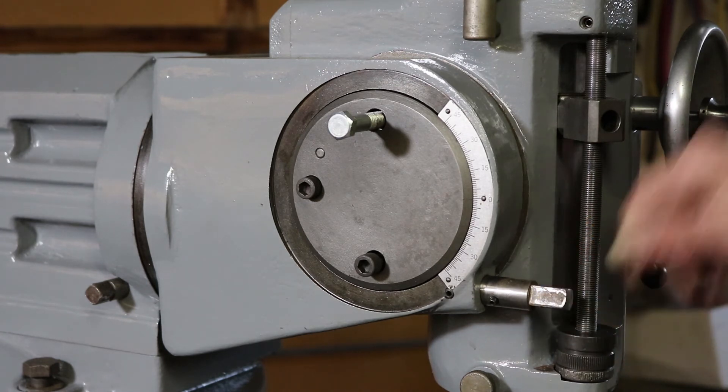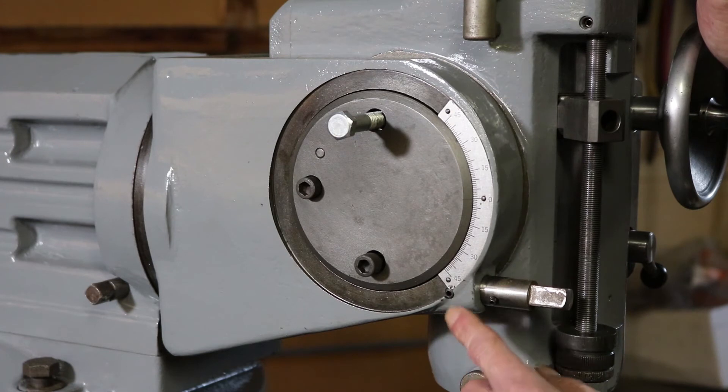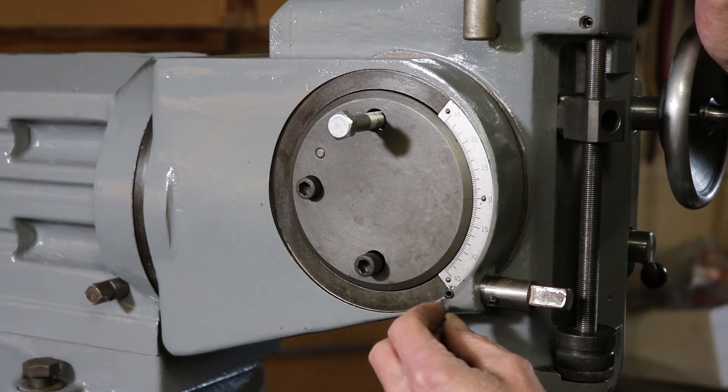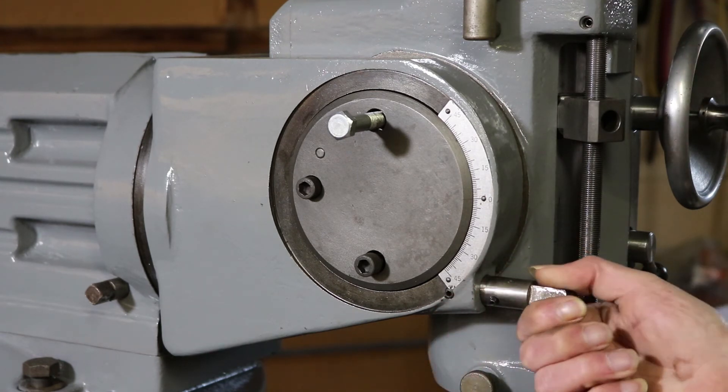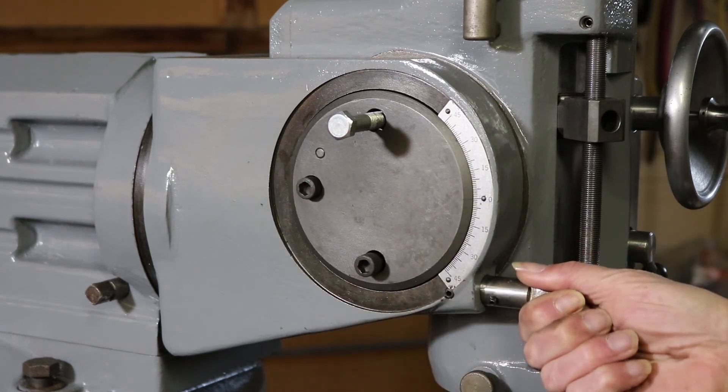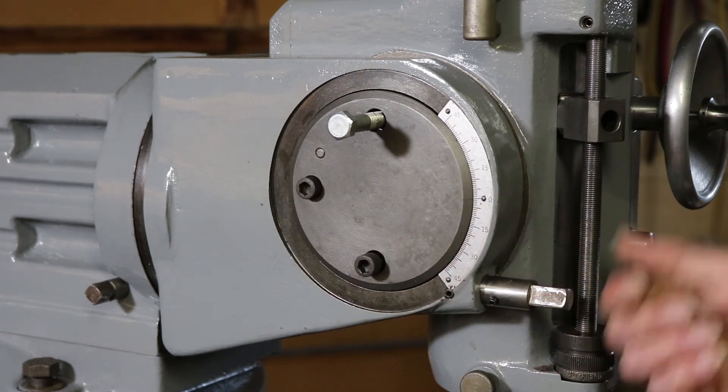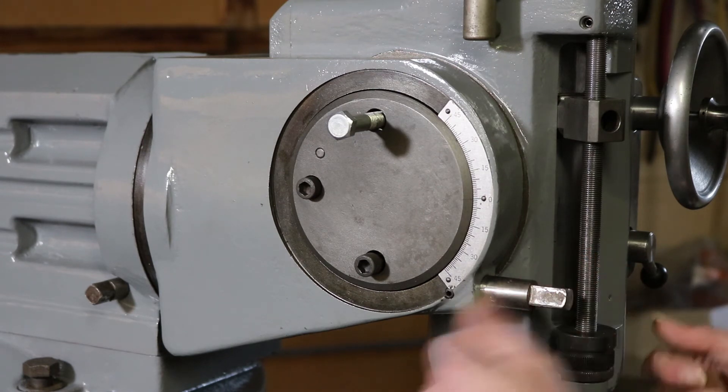To do that, there's a little set screw right here. You back that out, and then this worm, if you lock the caps in, this worm should back out just by turning it.